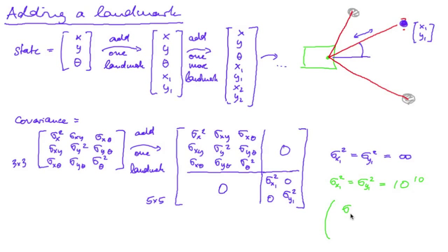Which, by the way, means that the standard deviation is 10 raised to the power of 5, which is 100,000. And since all this is in millimeters, this is 100 meters.